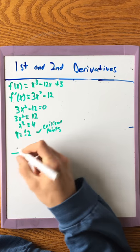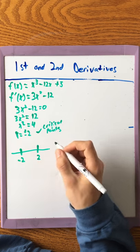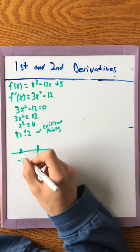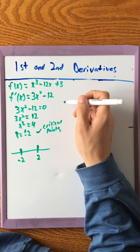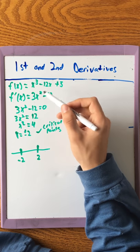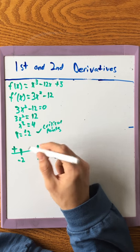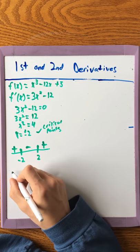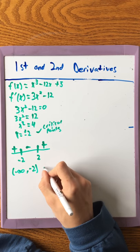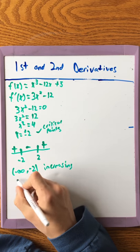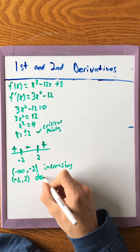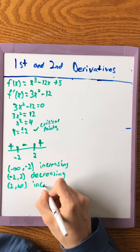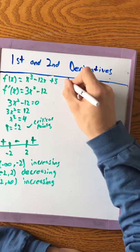We put the critical points on a number line: negative 2 and 2, because this is where the graph changes from decreasing to increasing. Plugging a value less than -2 into the first derivative gives a positive result, plugging in 0 gives negative, and anything larger than 2 is positive. So on (-∞, -2) it's increasing, on (-2, 2) it's decreasing, and from (2, ∞) it increases again.